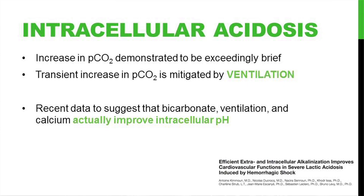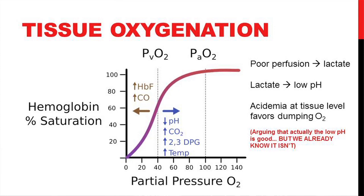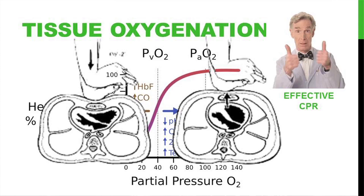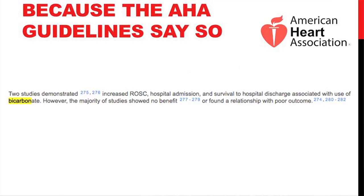Then there's the argument about tissue oxygenation. Bad perfusion leads to buildup of lactate, lactate leads to decrease in pH, and acidemia at the tissue level favors dumping O2 because of the hemoglobin dissociation curve — the pH shifts the curve to the right, that's the Bohr effect. I would argue that if you are circulating your patient effectively, this is not an issue. And finally, because the AHA guidelines say so — and they cite several studies to support their claim.